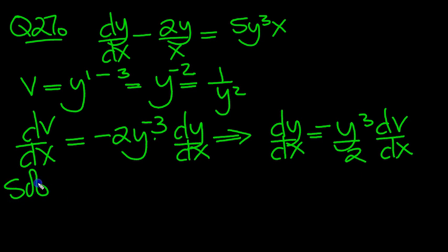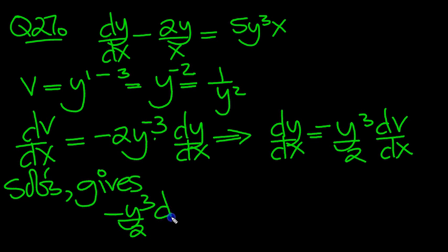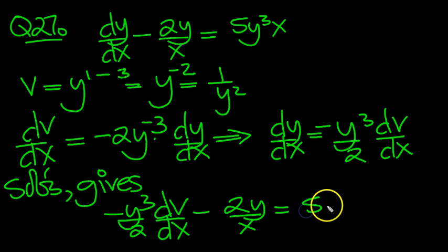So substitution then. Substitution gives, so dy/dx, put it in, times dy/dx, minus 2y over x equals 5y cubed x.